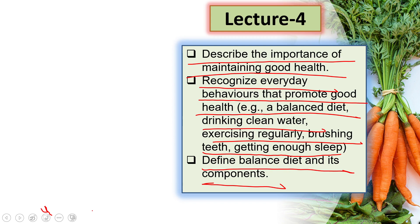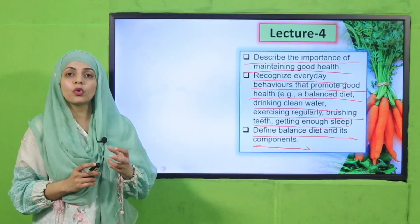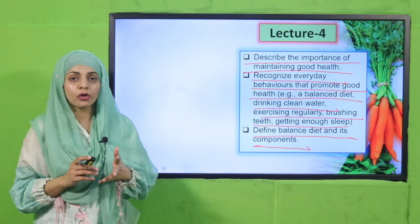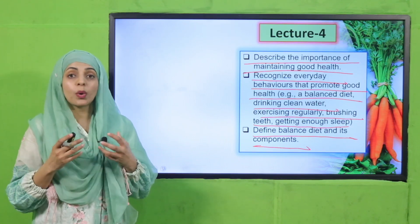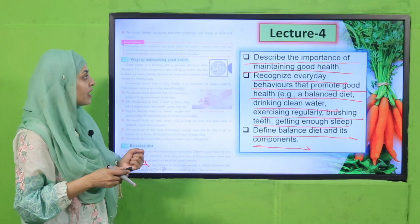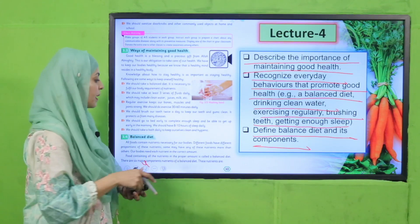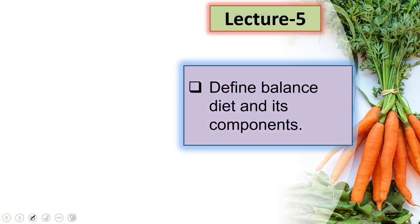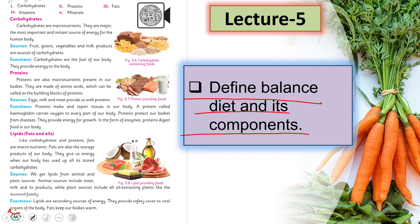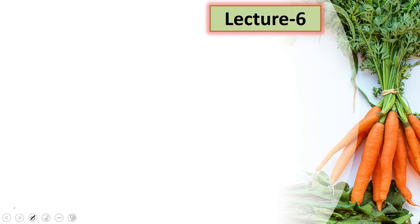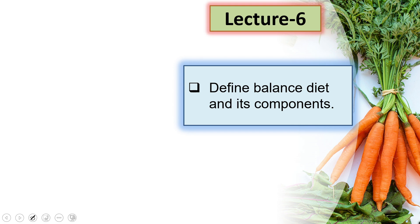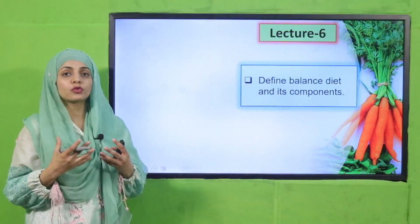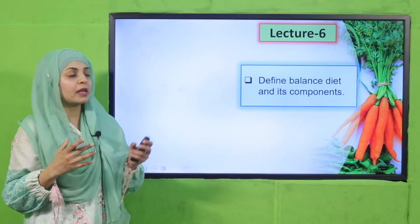Students will be able to define balanced diet and its components. The page under discussion is page number 44. In Lecture Number Six, students will further explore balanced diet health components like carbohydrates, proteins, and fats one by one, and the page under discussion is page number 45.